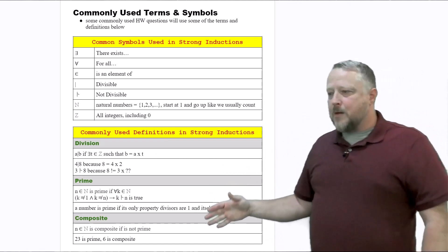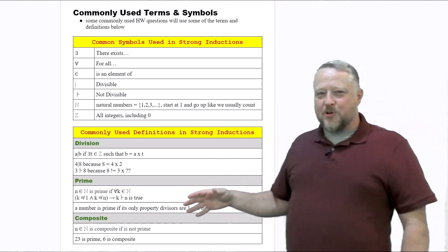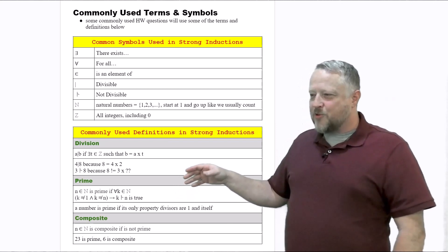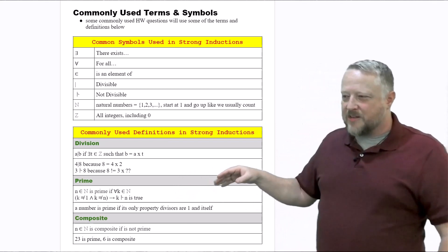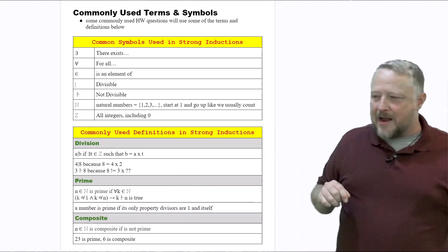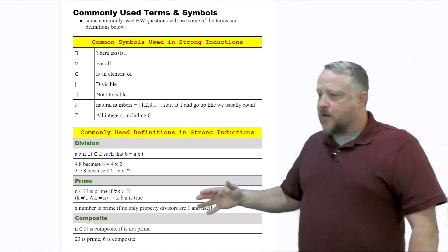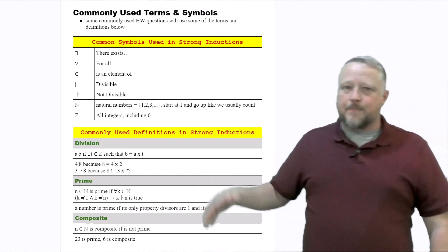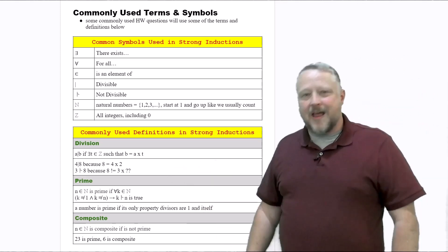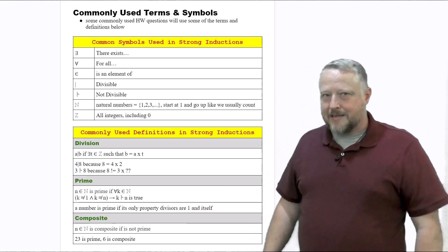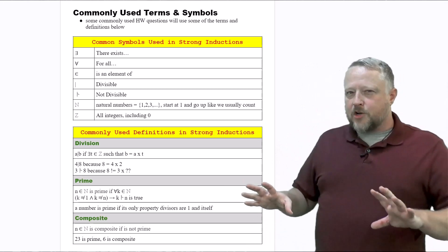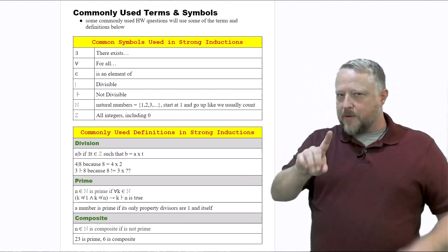Prime numbers — you should know what prime numbers are. A prime is only divisible by one and by itself. Then composite is just the opposite of a prime; if it's not a prime, then it is a composite. These are a couple of terms that are going to show up here in a little bit.